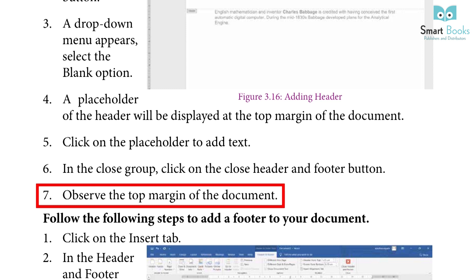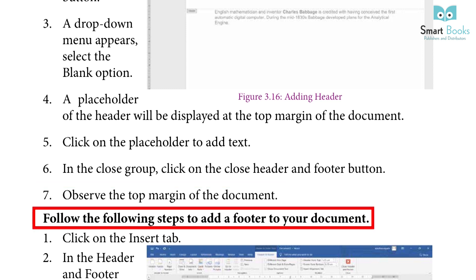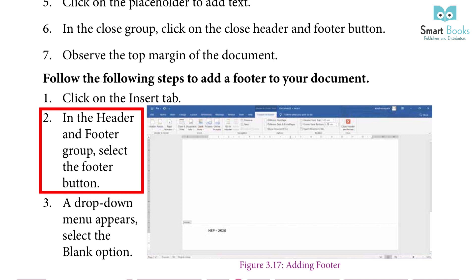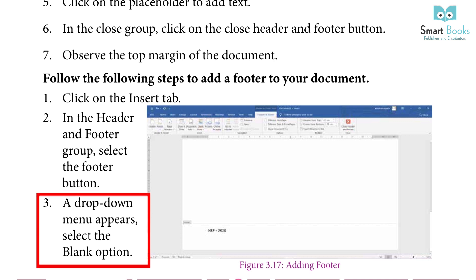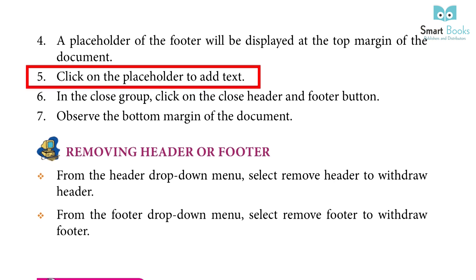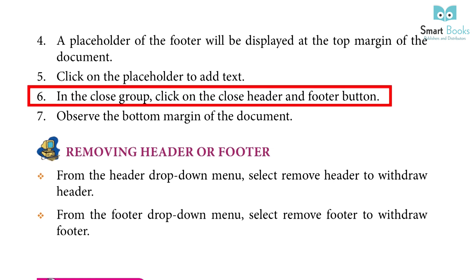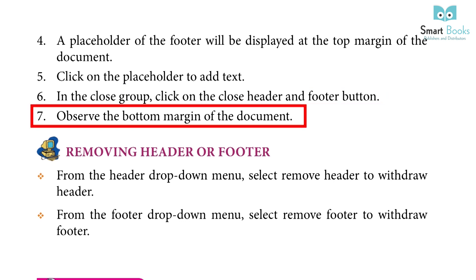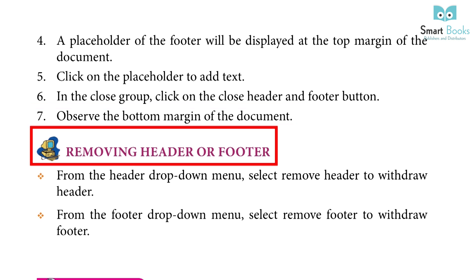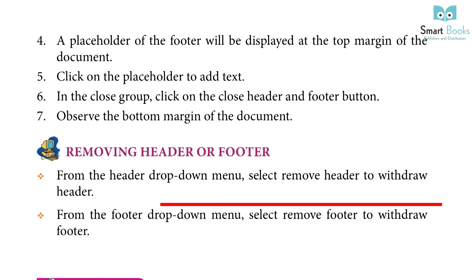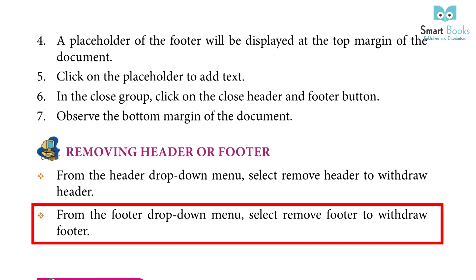Steps to add a footer: 1. Click the insert tab. 2. In the header and footer group, select the footer button. 3. A dropdown menu appears — select the blank option. 4. A placeholder of the footer will be displayed at the bottom margin. 5. Click on the placeholder to add text. 6. In the close group, click the close header and footer button. 7. Observe the bottom margin of the document. To remove: from the header dropdown select remove header; from the footer dropdown select remove footer.